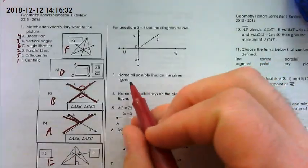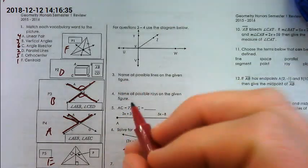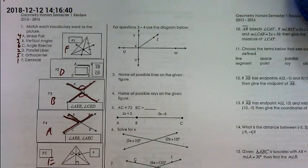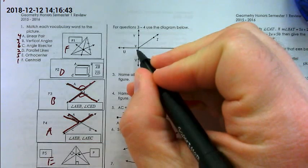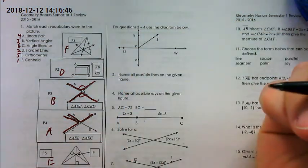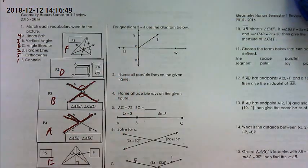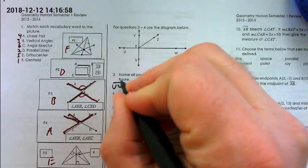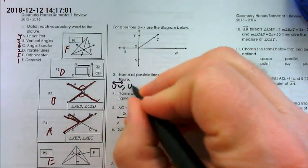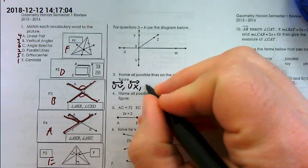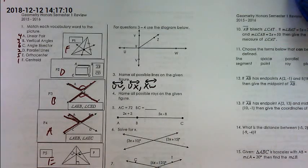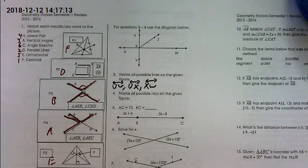On number three, name all the possible lines on the given figure. So there are actually two lines here. The one from X to Z is not a line because it doesn't extend infinitely in the opposite direction. So there's only the horizontal and vertical line here. In order to name them you have to use two points.